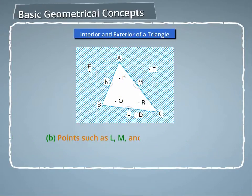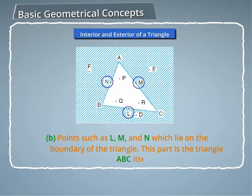Points such as L, M and N which lie on the boundary of the triangle. This part is the triangle ABC itself.